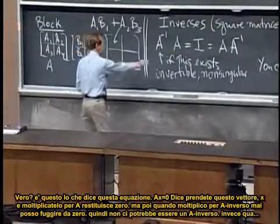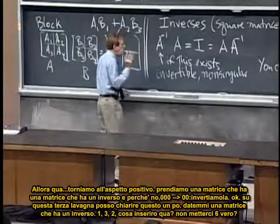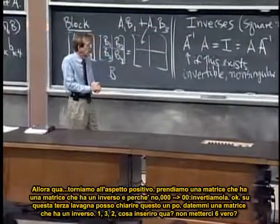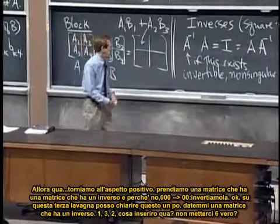Right? That's what this equation says. This equation says I take this vector x and multiplying by A gives zero. But then when I multiply by A inverse, I can never escape from zero. So there couldn't be an A inverse. Where here, okay, now let me take a, sorry, back to the positive side.